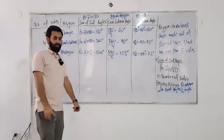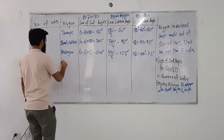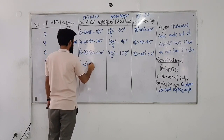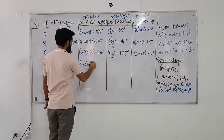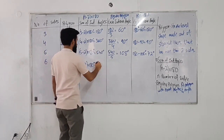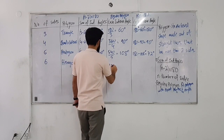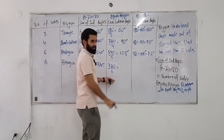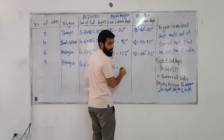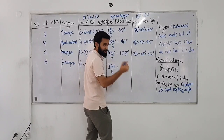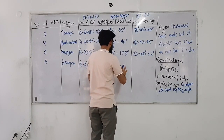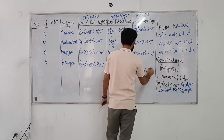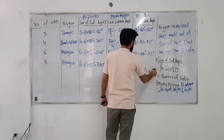What do you call a six-sided polygon? A hexagon. The sum of interior angles: six minus two is four, four times 180 is 720. Each interior angle: 720 divided by 6 is 120 degrees. And the exterior angle? 180 minus 120 gives you 60 degrees.